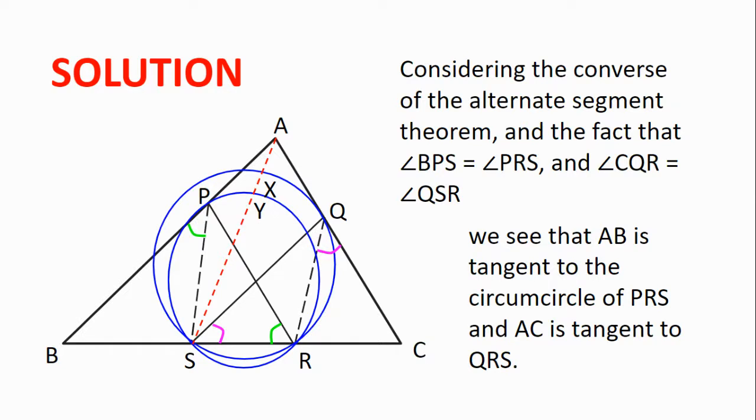Then, considering the converse of the alternate segment theorem and the fact that angle BPS is equal to angle PRS, we see that AB is tangent to the first circle, the circumcircle of PSR. In the same way, we can find that AC is tangent to the second circle, the circumcircle of QRS.